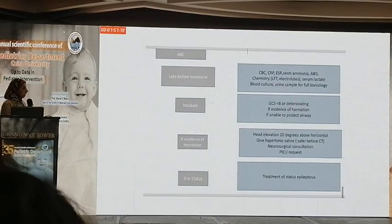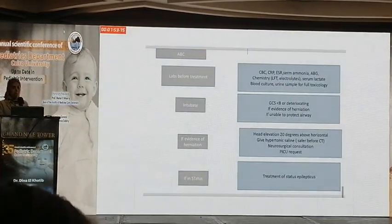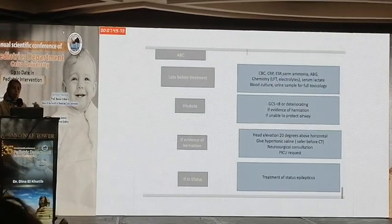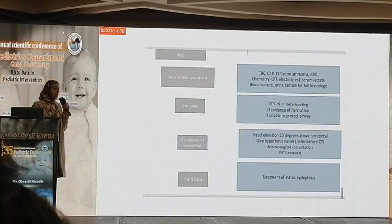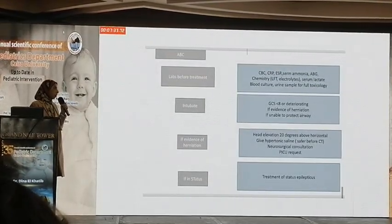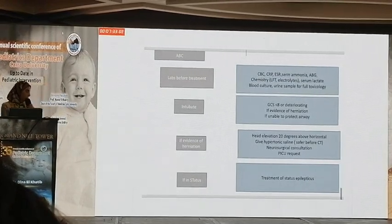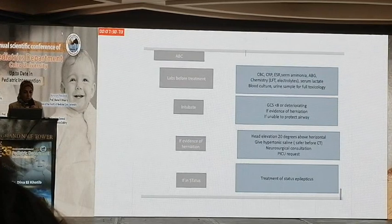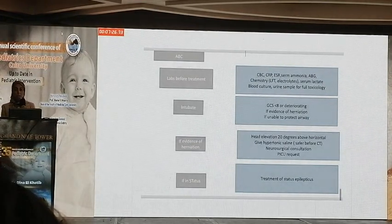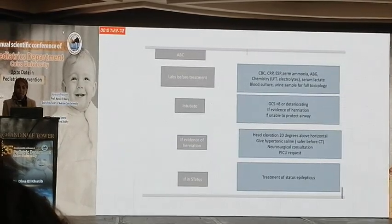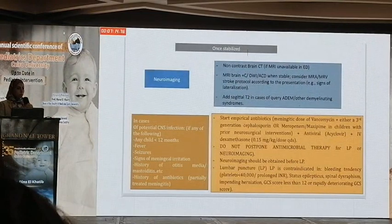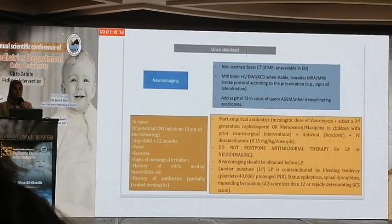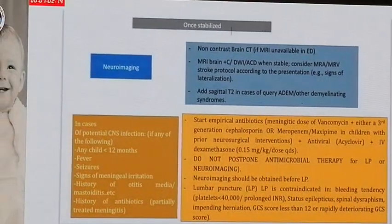How do we deal with a patient presenting with altered conscious level to the ER? Start with ABC, obtain labs and initiate treatment. Intubation depends on the Glasgow Coma Score and the clinical presentation — indicated if GCS is lower than 8, if there is evidence of brain herniation, or if the patient is unable to protect the airway. If there is brain herniation, elevate the head 20 degrees above horizontal, give hyperosmolar therapy, perform neurosurgical consultation, and treat status epilepticus if present. Once stable, proceed with neuroimaging — CT brain, and consider MRI and MRA if stroke is suspected, especially with signs of lateralization.